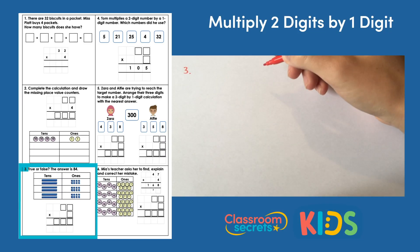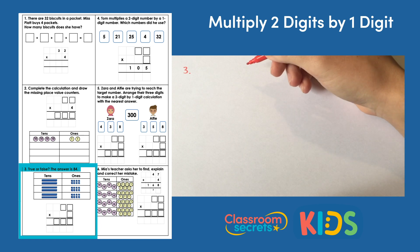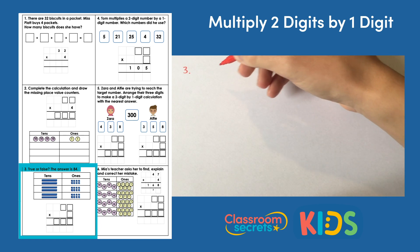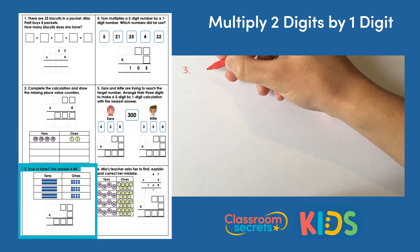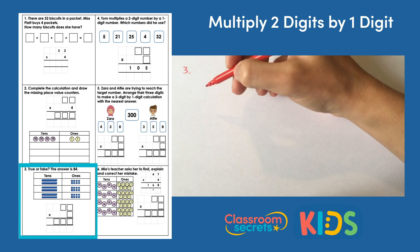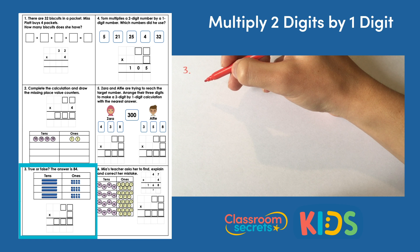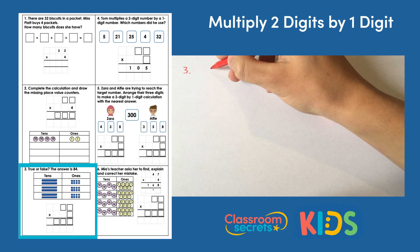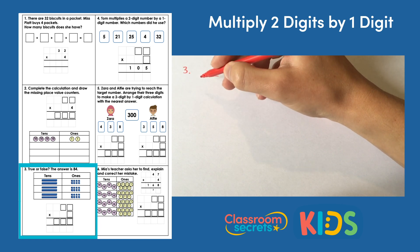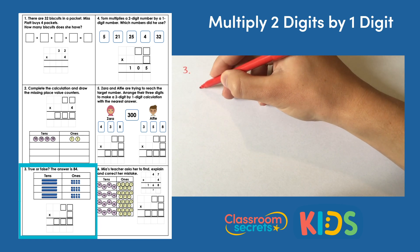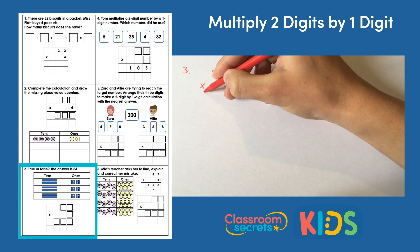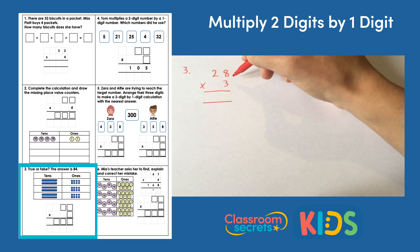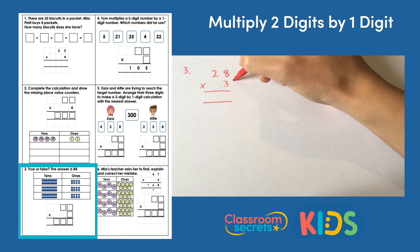Number three asks us if it's true or false that the answer is 84. We've got an empty calculation for our column multiplication, but we've been given base 10 blocks. Looking in each row, we have two tens and eight ones — two tens and eight ones is 28 — and we have three lots of those, so we're multiplying 28 by three. We start with our ones.